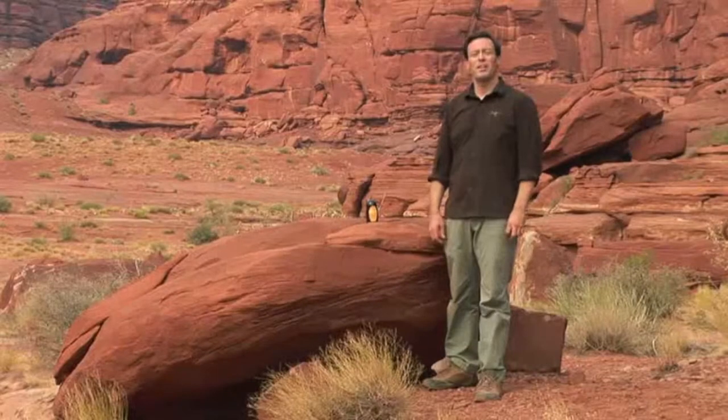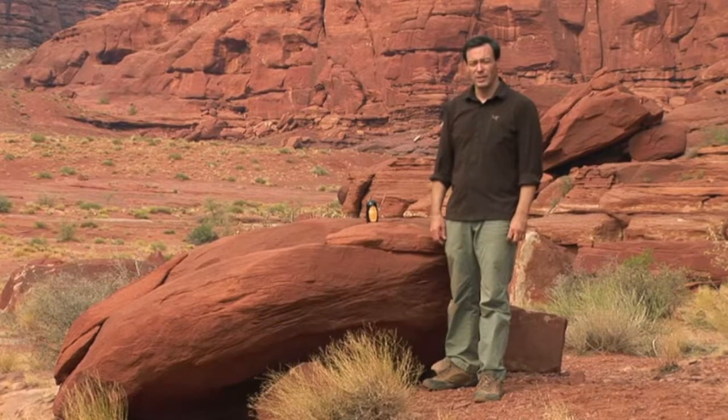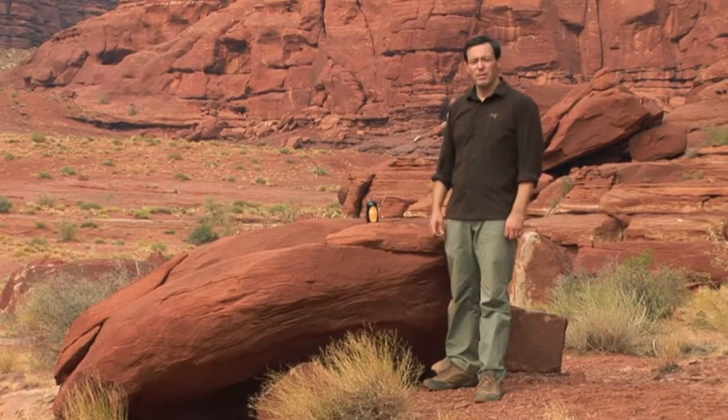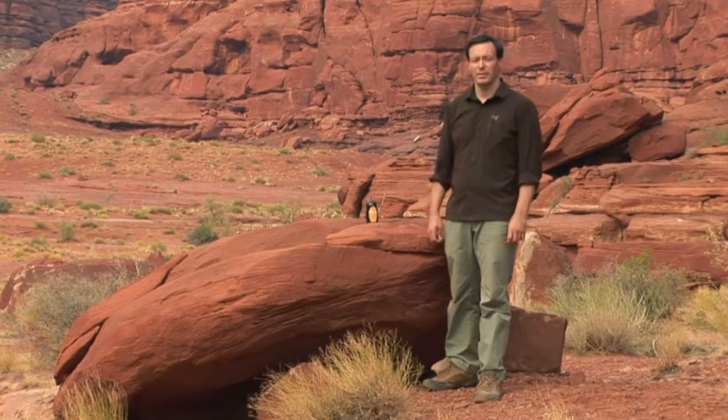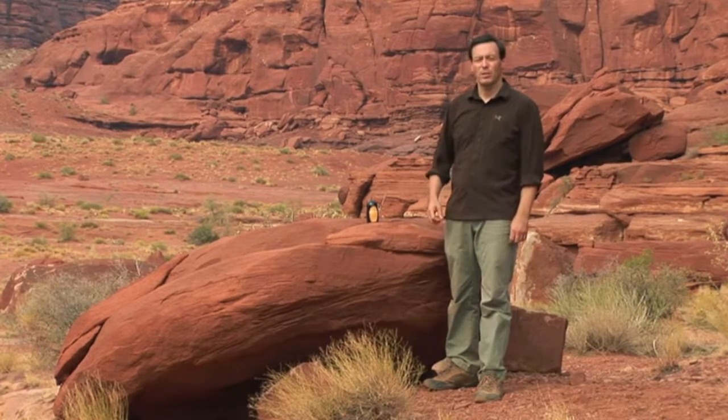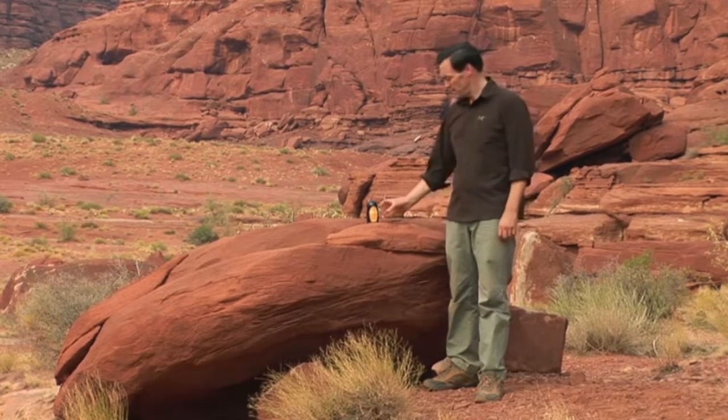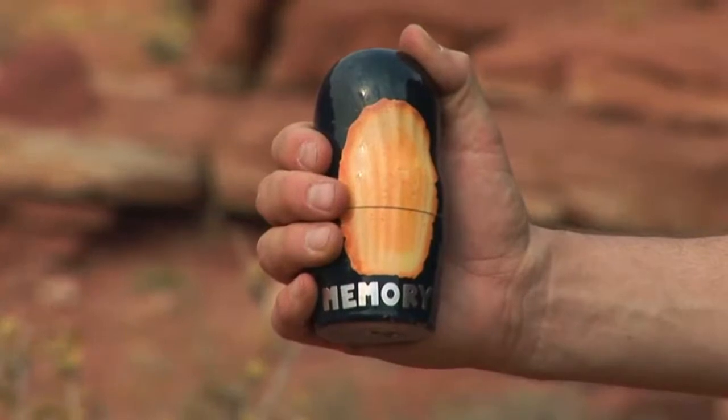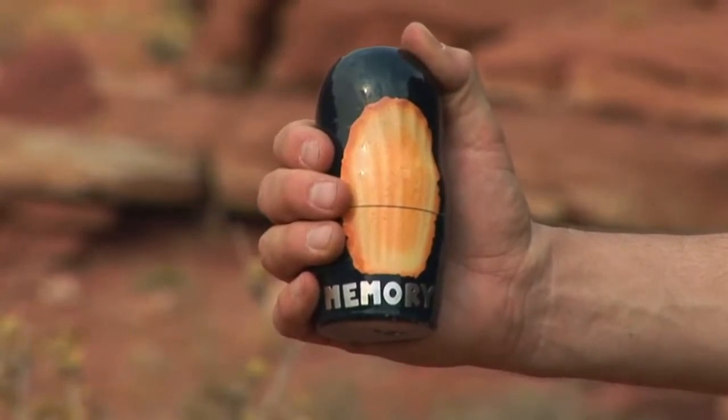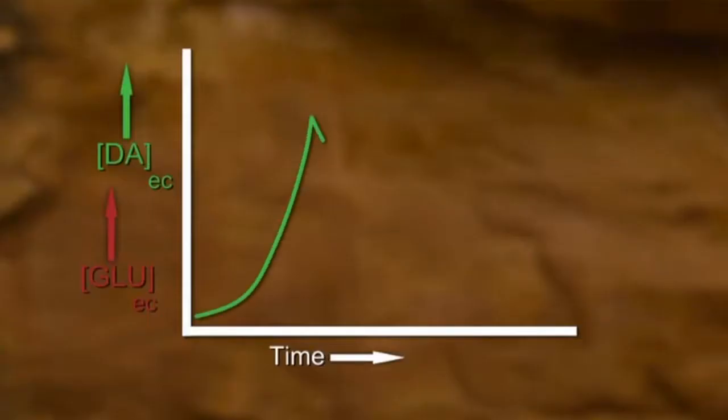Once the brain has found something that is good for survival, it has to remember it. The brain uses a second neurochemical to do this, glutamate. Glutamate is the chemical of memory formation. It lays down memories of natural rewards like food, but drugs cause such huge surges of neurochemicals that glutamate locks the drug into memory.